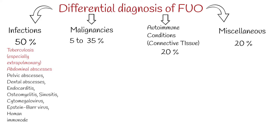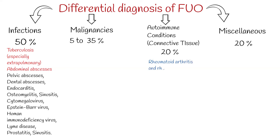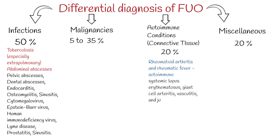Rheumatoid arthritis and rheumatic fever are inflammatory diseases that used to be commonly associated with autoimmune FUO, but with advances in serologic testing, these conditions are usually diagnosed more promptly. Common connective tissue disorders include systemic lupus erythematosus, rheumatoid arthritis, giant cell arteritis, vasculitis, and juvenile rheumatoid arthritis of adults — also known as adult Still's disease.